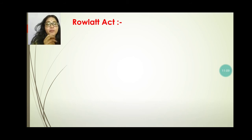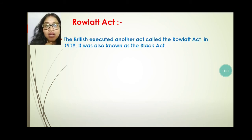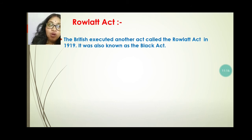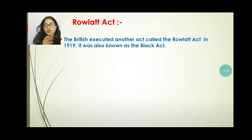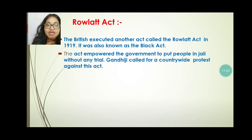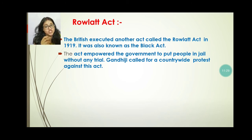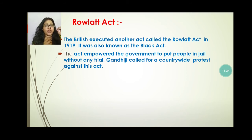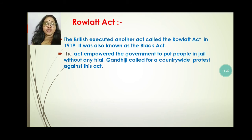The next topic is the Rowlatt Act. The British executed another act called the Rowlatt Act in 1919. It was also known as the Black Act. This act empowered the government to put people in jail without any trial — anytime they could put anyone into jail. Gandhiji called for a countrywide protest against this act.